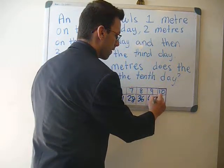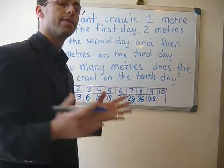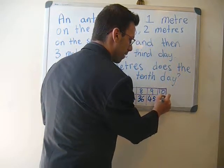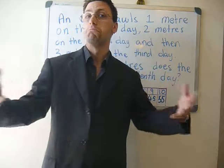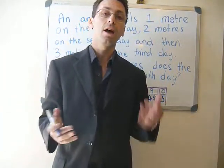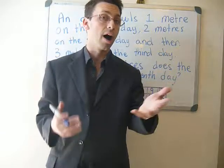Twenty-one plus seven, twenty-eight metres. Twenty-eight plus eight, thirty-six metres. Thirty-six plus nine equals forty-five metres. And the last one, forty-five plus ten equals fifty-five metres.